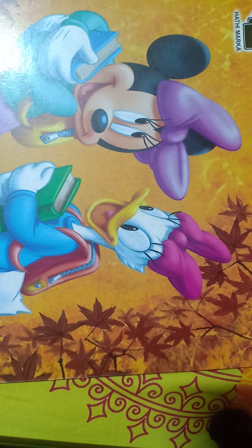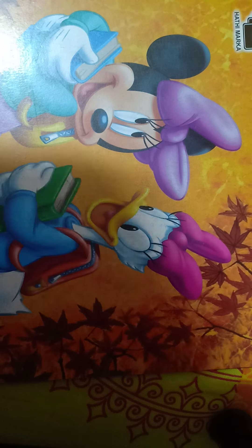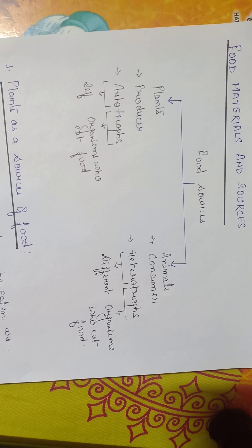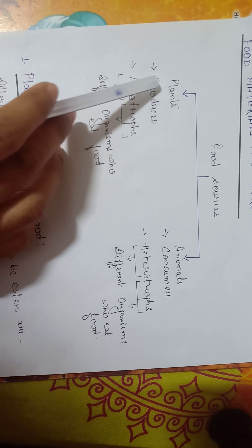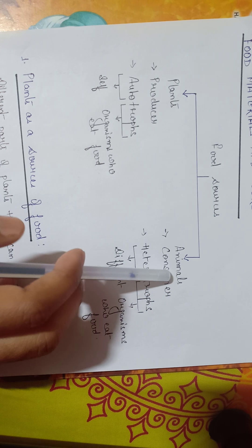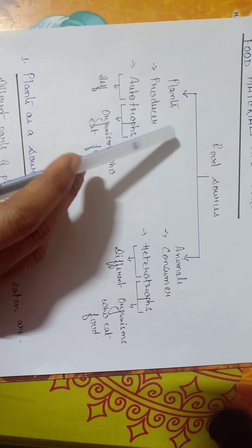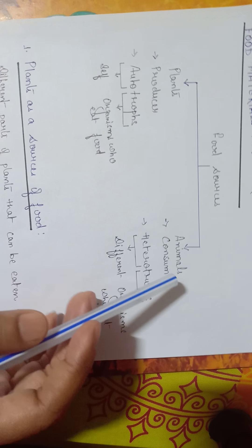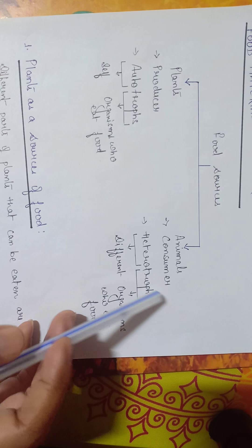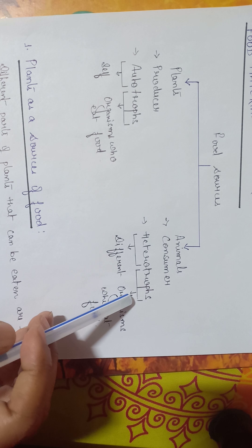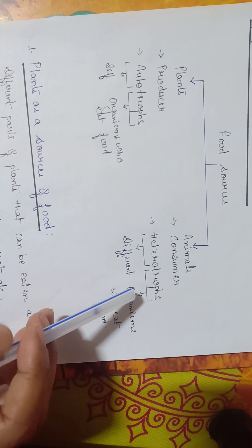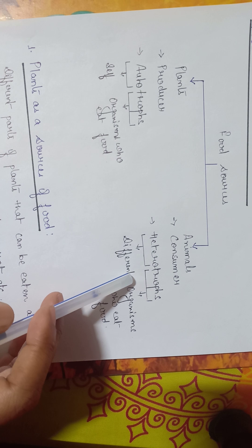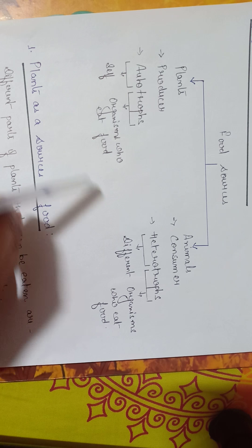Now coming to the next topic: food material and sources. Food sources can be derived from two main groups, that is plants and animals. Plants are also called producers or autotrophs because they can make their own food. Animals are called consumers or heterotrophs because they cannot make their own food — they depend on other plants and animals for their food.